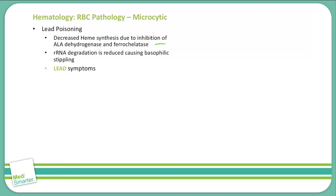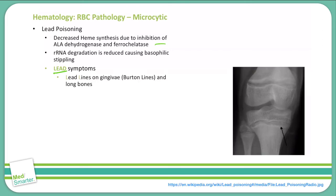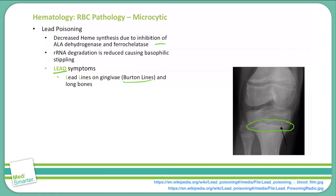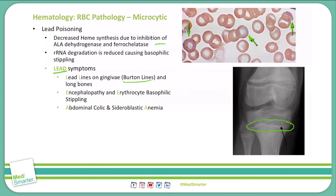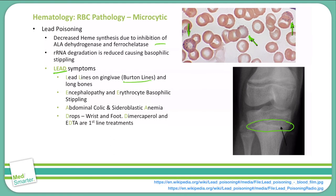The symptoms of lead poisoning spell out L-E-A-D. L is lead lines on the gingiva (Burton lines) and lead lines on the long bones, visible on X-ray. E is encephalopathy and erythrocyte basophilic stippling, seen at the head of the arrows. A is abdominal colic and sideroblastic anemia. D is drop — wrist drop and foot drop. First-line treatments include dimercaprol and EDTA.